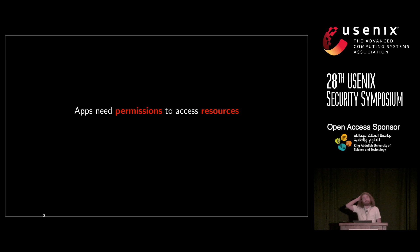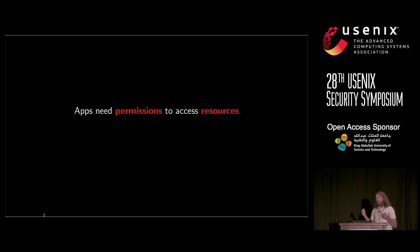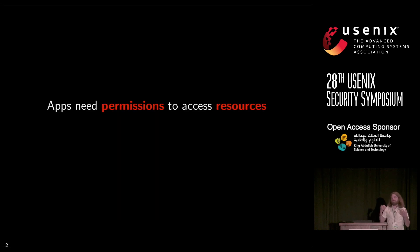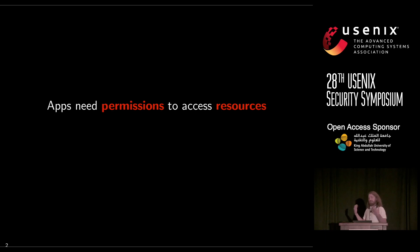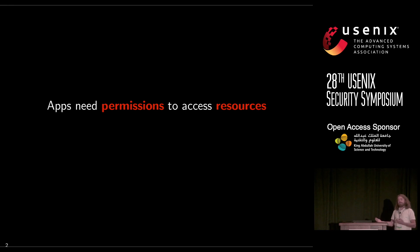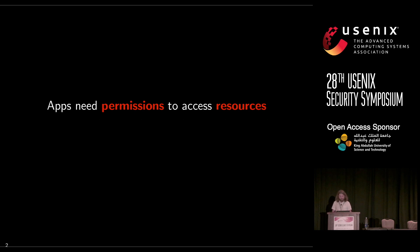Apps need permissions to access resources. We're carrying around smartphones filled with sensors and lots of personal information, and we want to make sure that any app that gets installed doesn't get full reign of the device. So we have a permission system on Android where apps have to request a permission, and if the user grants the permission or installs the app, apps can access these resources.